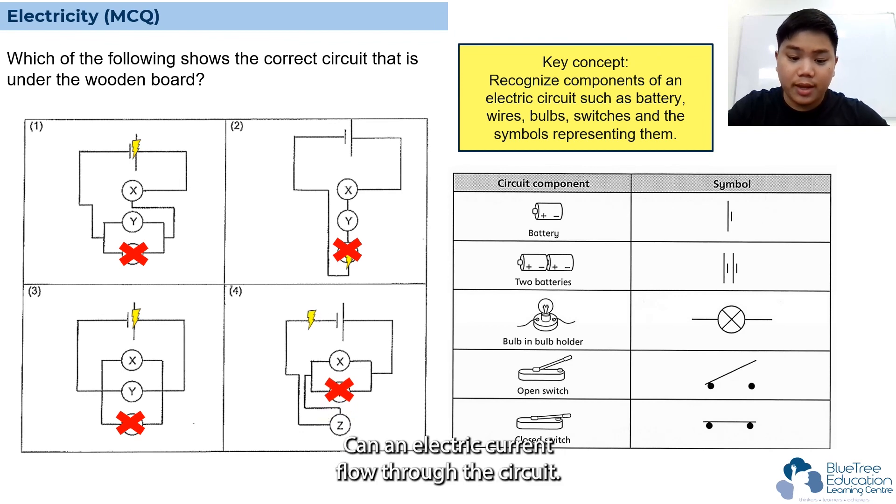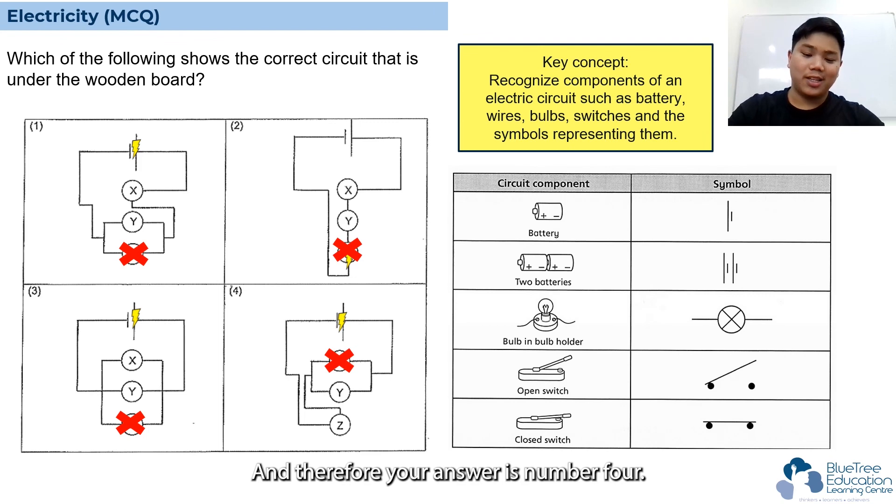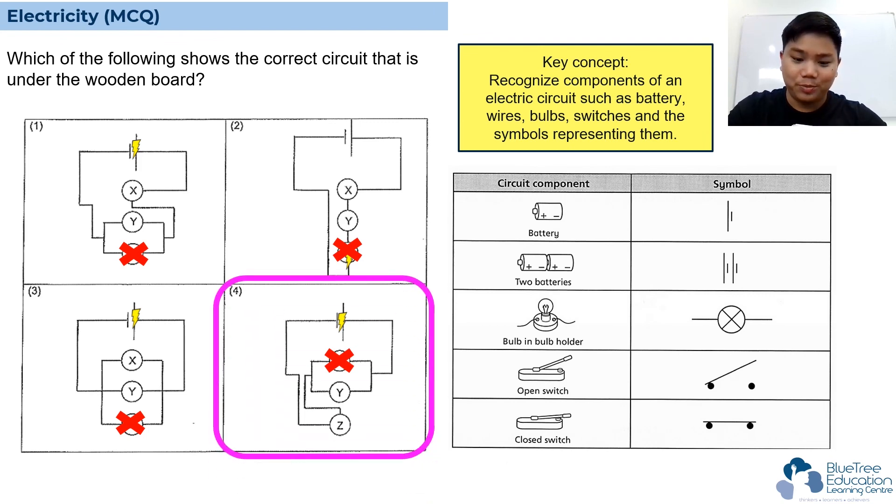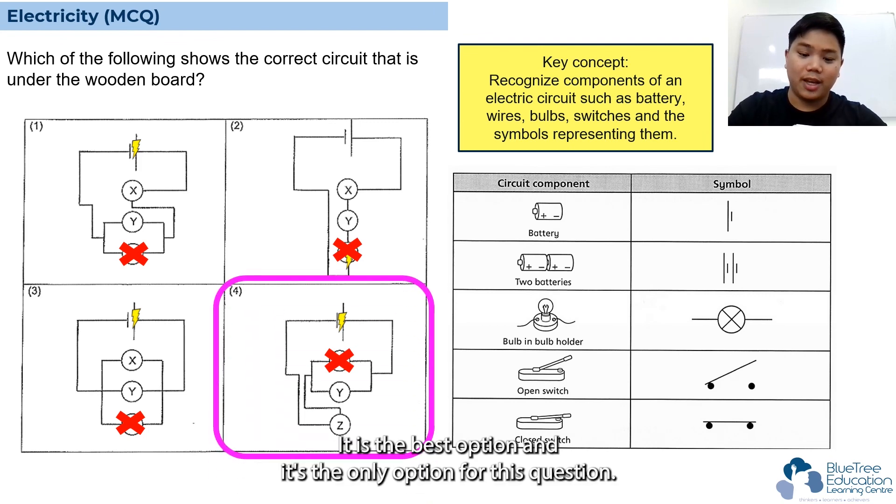If there's no bulb in bulb holder Y, can electric current flow through the circuit? Yes, it can. What about X? It works too, and therefore your answer is number four. It is the best option and it's the only option for this question.